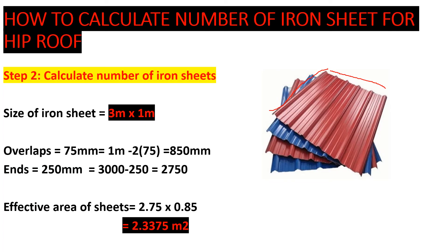We subtract these to get the effective length and width, because we need the effective area of the iron sheet, not the gross area. For the width: 1000 − 150 = 850 mm. For the length: 3000 − 250 = 2750 mm. So the effective area = 2.75 m × 0.85 m = 2.3375 m².